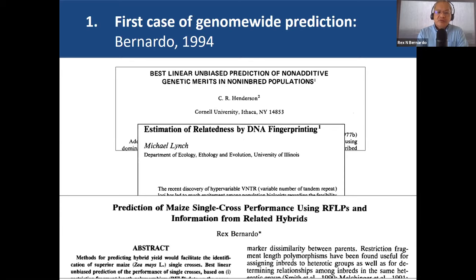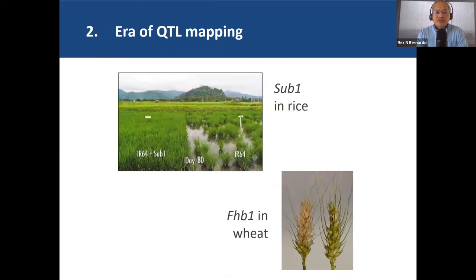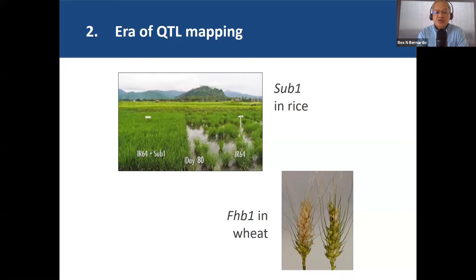That happened in 1994, in the era where the focus really was on QTL or marker-assisted selection — the time of QTL mapping in the 1990s — which led to wonderful results such as finding major QTL for submergence tolerance in rice, the Sub1 QTL widely deployed, and the FHB1 QTL for Fusarium head blight resistance in wheat. Looking back, for traits with potential major QTL, such as abiotic and biotic stress tolerance, we use QTL mapping; but for traits where there aren't major genes, we use a predictive process, namely genomic prediction.